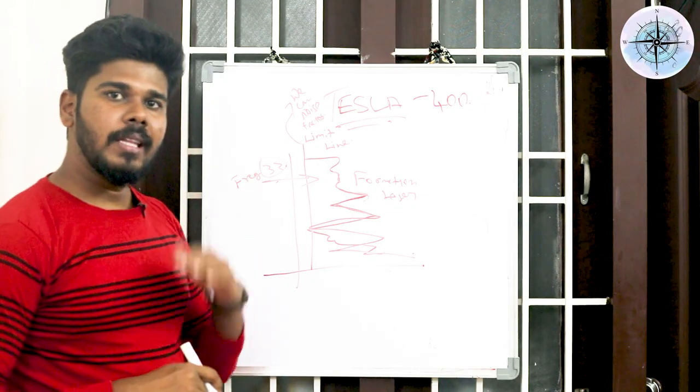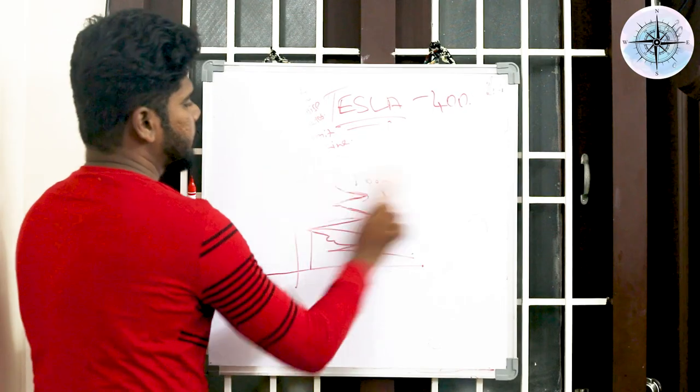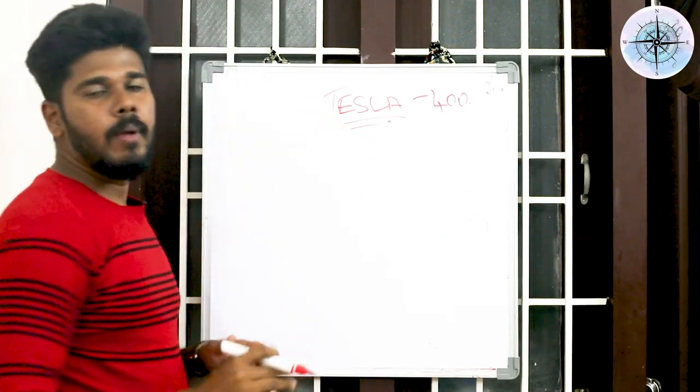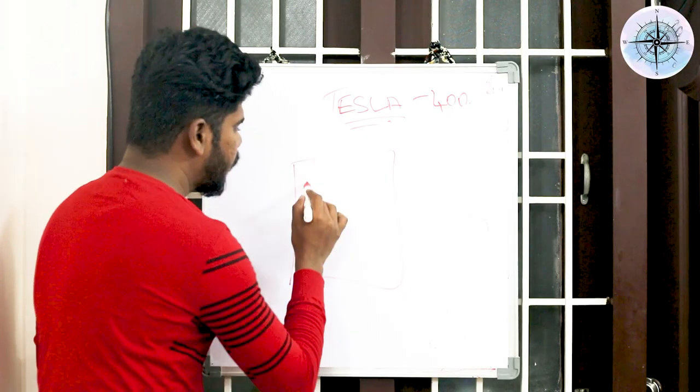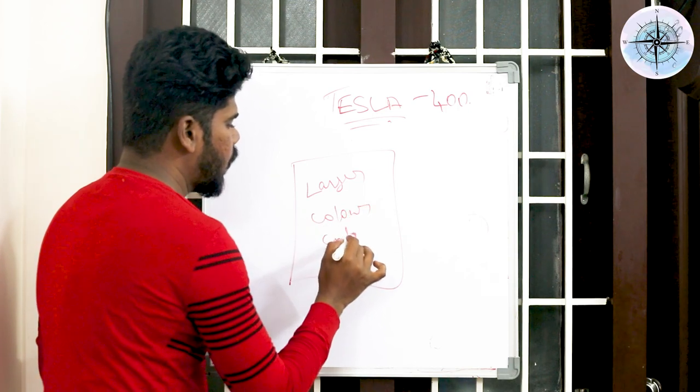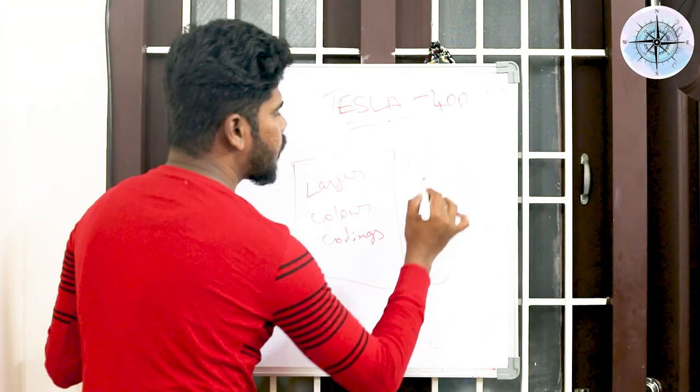So we have considered the final factor and then the curve graph. Next one is the contour mapping. How are we going to calculate with contour mapping? Contour mapping is the layer mapping system where you are going to identify through color codings. The color codings are written in the report itself in the sidebar.